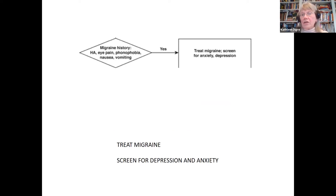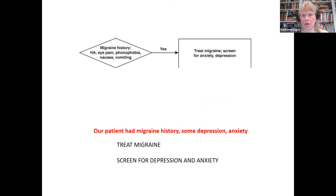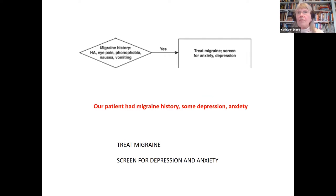At the end of this workup, screen for migraine: headaches with light and sound sensitivity, nausea and/or vomiting, and worsening with activity — because migraine is so common. Also screen for depression and anxiety. Our patient did have a migraine history — we knew that right away — and she does have some depression and anxiety.